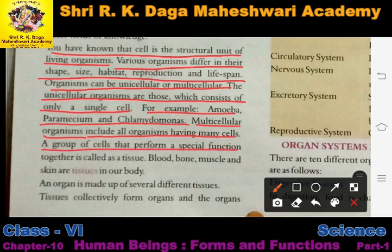A group of cells that perform a special function together is called a tissue. Many cells grouped together performing a specific function in our body is called tissue. Blood, bone, muscles and skin are the tissues in our body.